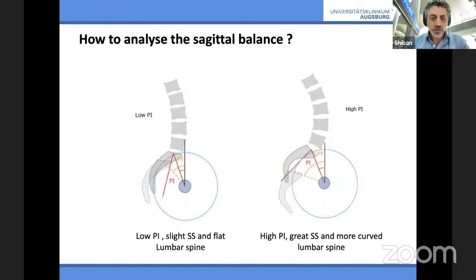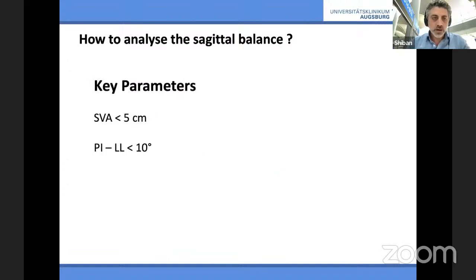If you have a low pelvic incidence, you'll need a low lumbar lordosis to stay harmonic in the spine. If you have a high pelvic incidence, you'll see that you need a higher lumbar lordosis again to stay harmonic and upright. The key parameters are SVA less than 5 cm, and the pelvic incidence–lumbar lordosis mismatch shouldn't be more than 10 degrees. Pelvic incidence is a constant — you are born with it.